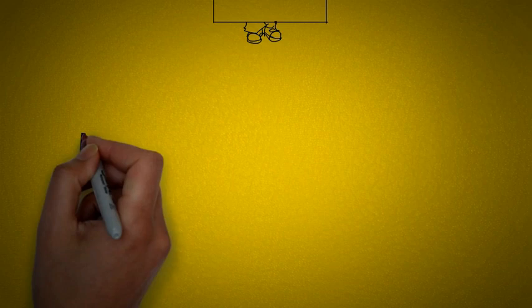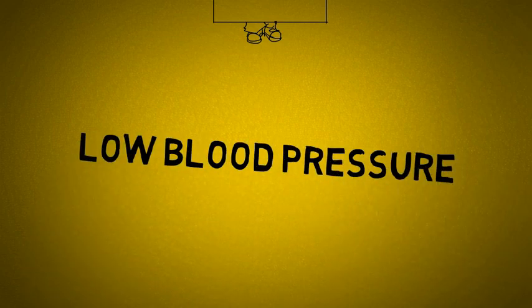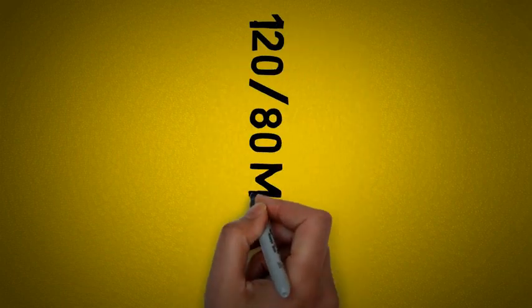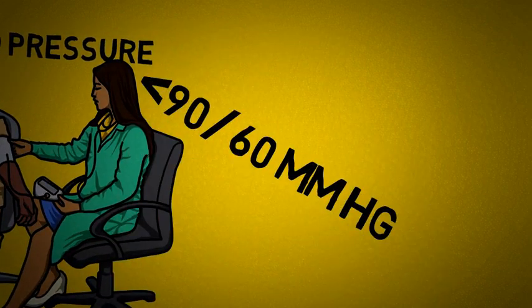Hypotension is also known as low blood pressure. As we all know, a normal blood pressure is 120 over 80 mmHg. A low blood pressure is when the reading is lower than 90 mmHg over 60 mmHg.